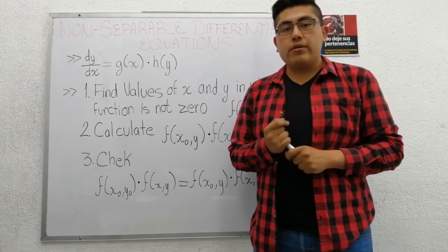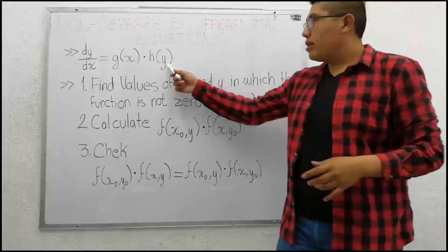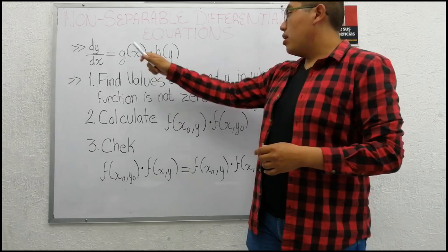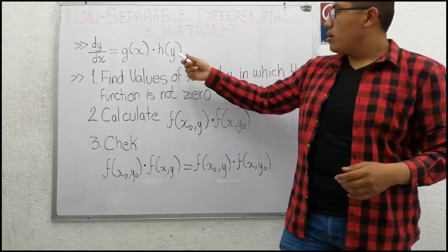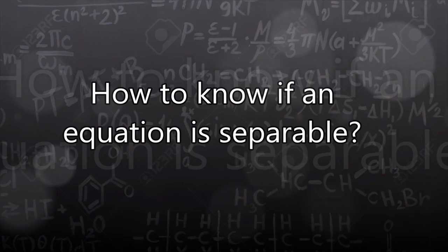We can separate the equation when it is expressed as a product of functions that each depend on one variable. Here we can see dy over dx equals g of x times h of y.